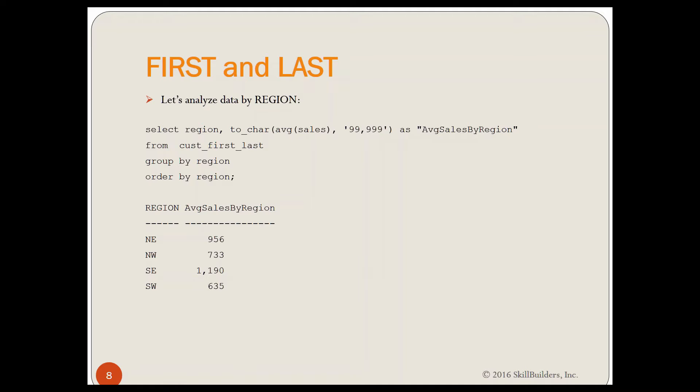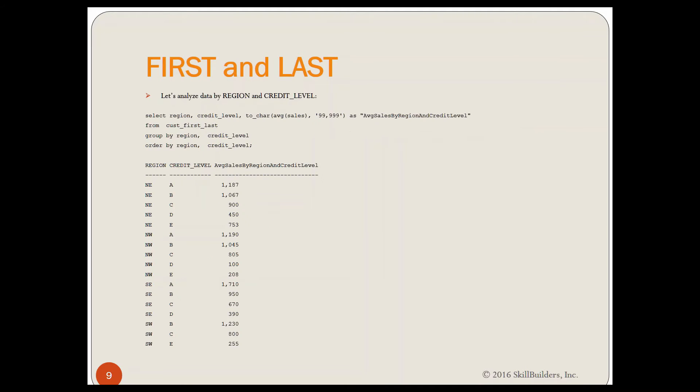I haven't used first and last yet, but I'm building towards that. Then next, let's look at a little bit more data. Let's look at this data in more detail. If I group by region and credit level and display region and credit level, I notice that for Northeast, I have credit levels A, B, C, D, and E. And the average for A is 11.87, for B it's 10.67, and so on.